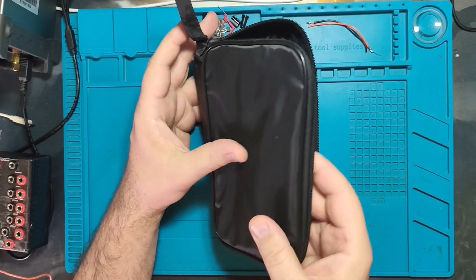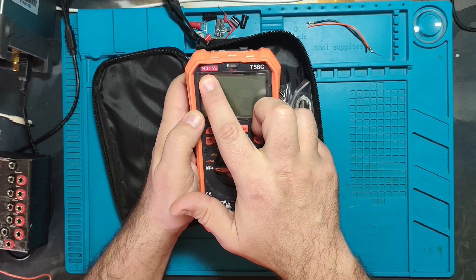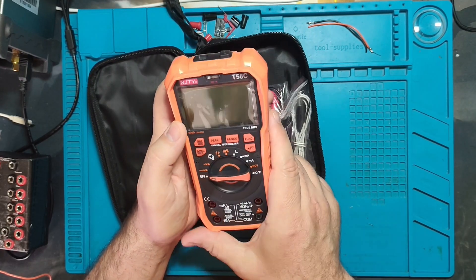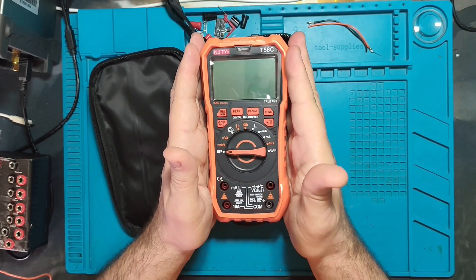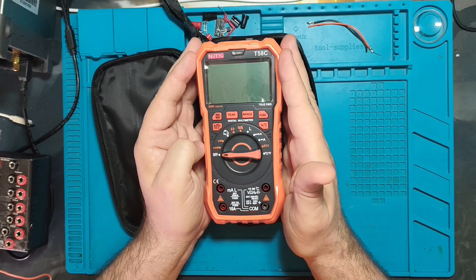Usual packing, you know. NGT Epsilon, I don't know, T58C. I don't know who they are, what they are, but it's claimed high precision true RMS multimeter.